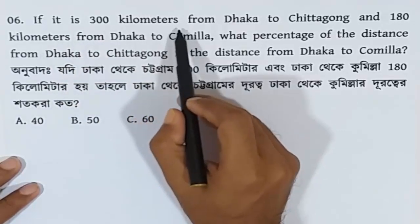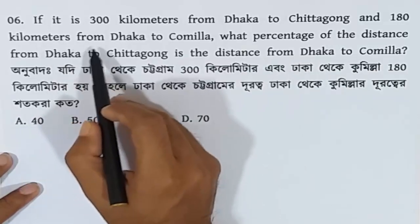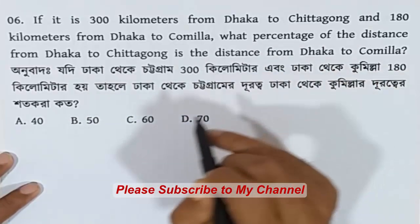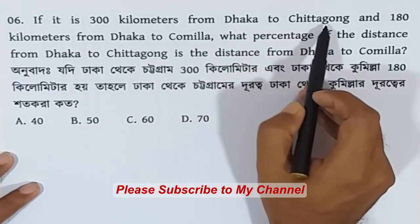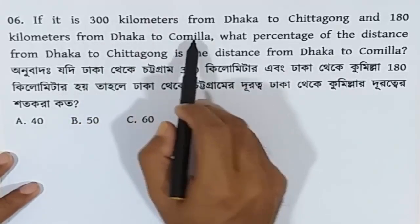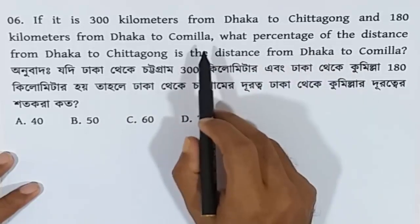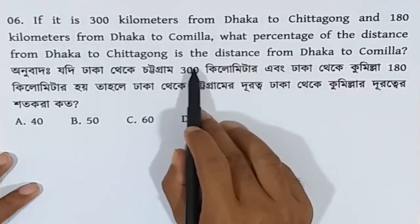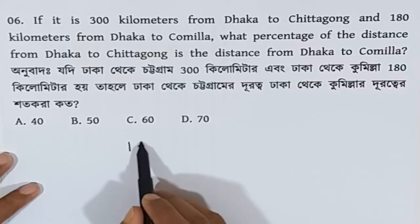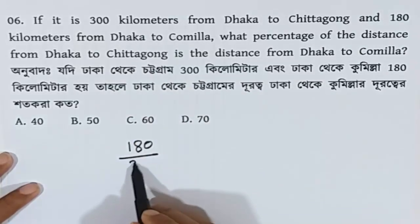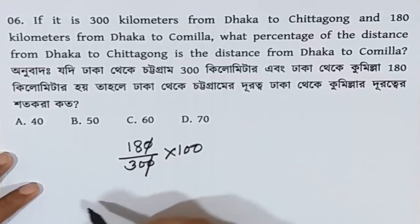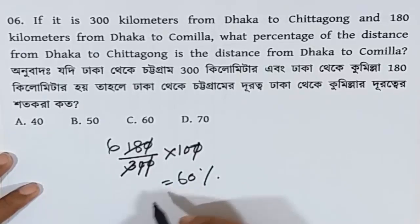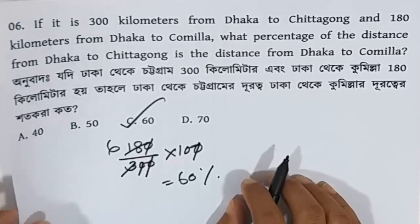If it is 300 km from Dhaka to Chittagong and 180 km from Dhaka to Comilla, what percentage of the distance from Dhaka to Chittagong is the distance from Dhaka to Comilla? Dhaka to Chittagong is 300 km and represents 100%, so Dhaka to Comilla at 180 km is 60%. The correct answer is 60%.